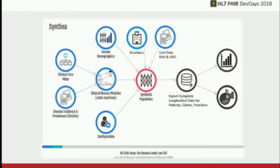The way the project works is we started with clinical care maps — sometimes called clinical practice guidelines or the standard of care. We get these from peer-reviewed journals and publications from medical specialty societies. We've turned these into state machines, which I'll show you later. Then we seed those with disease incidence and prevalence statistics from places like the CDC, the NIH, or other peer-reviewed literature. We create these disease modules that drive the progression and treatment of care in patients.